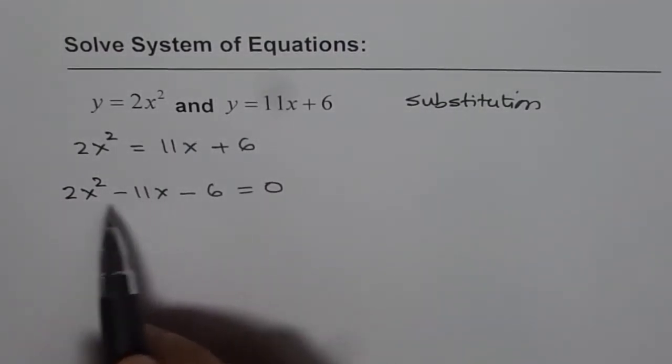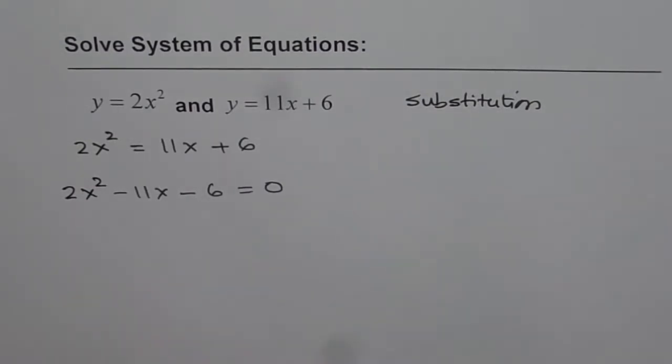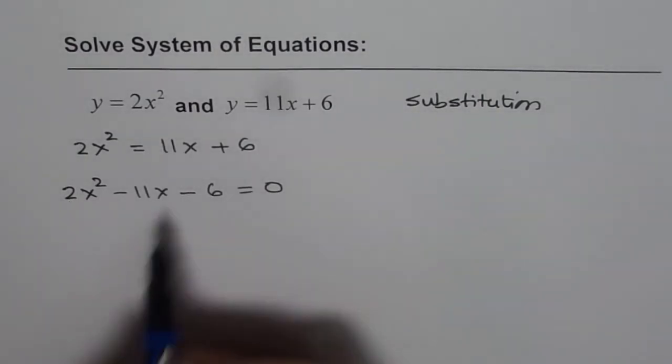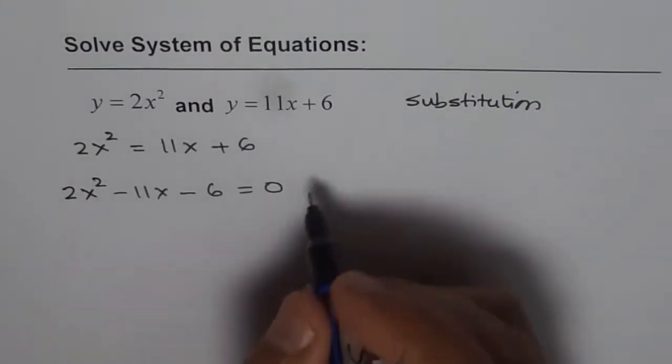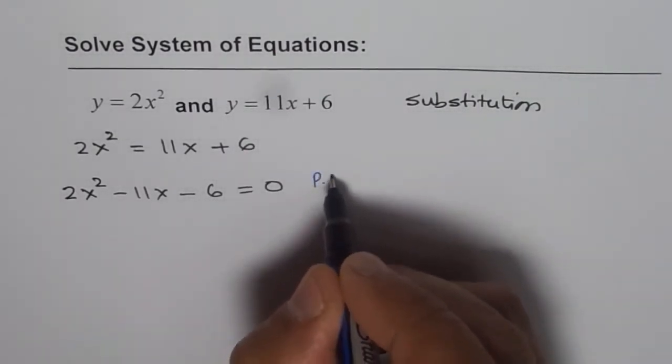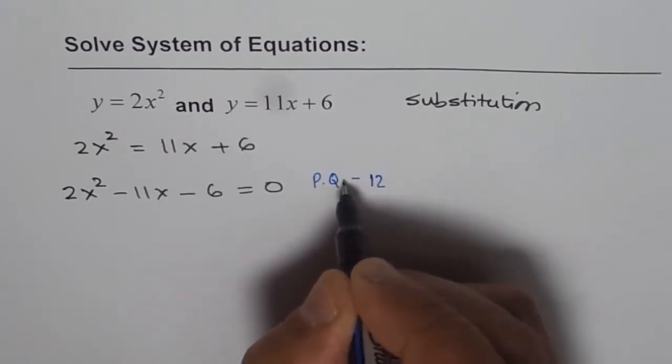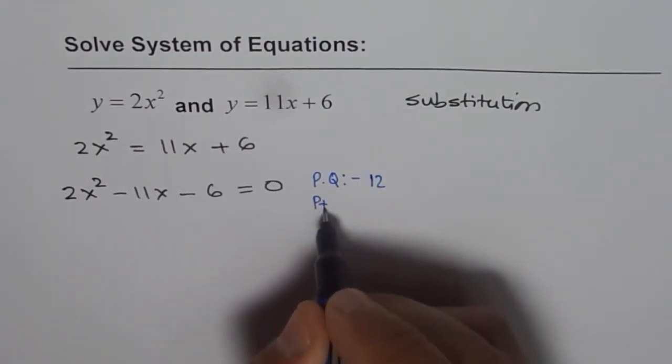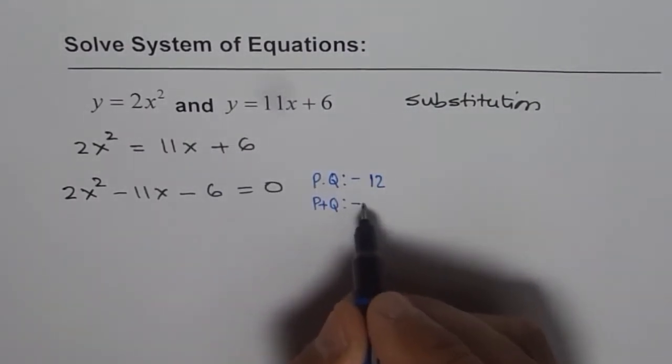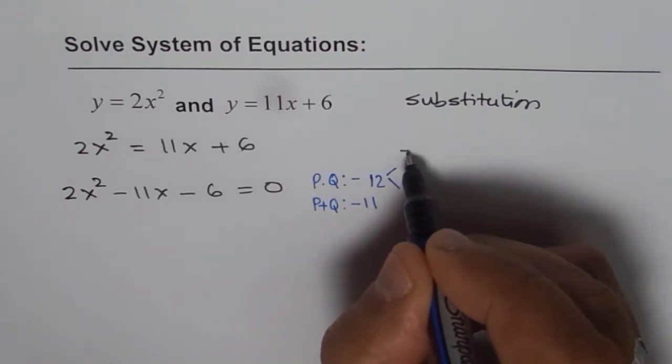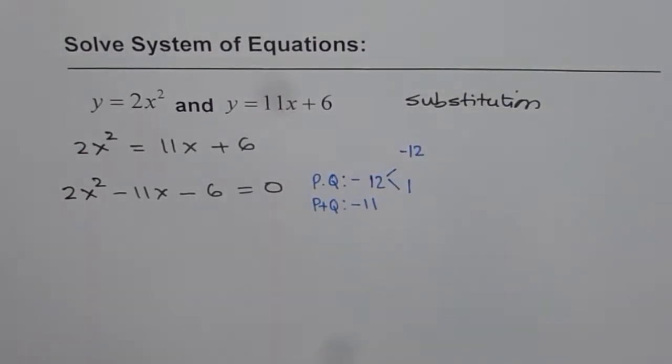At this stage we can find the value of x by using quadratic formula or we can also factor it. Now factoring is not difficult here since we are looking for two numbers whose product is 6 times 2 which is minus 12. So we are looking for two numbers p and q whose product is minus 12. And the sum p plus q should be equal to minus 11. Now the two numbers can be 12 times 1. And since we need sum as negative we will take plus 1. So these two numbers can help us factorize this.